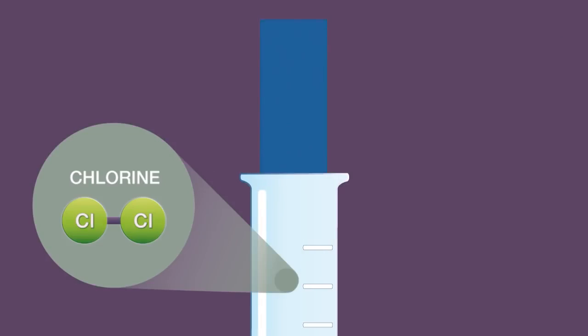Chlorine turns damp blue litmus paper red and eventually bleaches it to white.